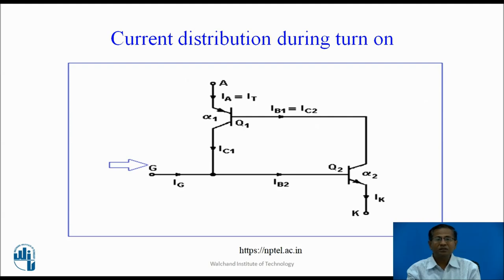Current distribution during turn-on. When gate pulse is applied, this gate pulse acts as IB2. Because of IB2, the IC2 is equal to beta 2 times IB2, and this IC2 acts as the base current of Q1. Because of this regenerative action, the device conducts and latches into the conduction state. If we then remove the IG, it remains in the conducting state. That is why the GTO is also called a latching device.